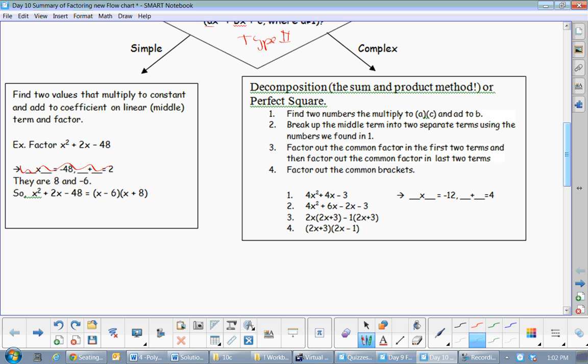What two things add to give me positive 2, multiply to give me negative 48. Make sure you establish the signs first. The signs would be positive and negative, okay? And then it would be positive 8 and negative 6.